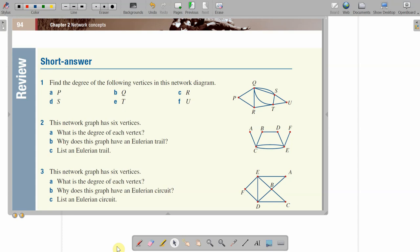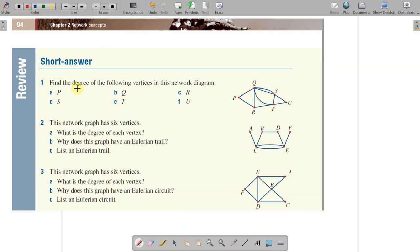Welcome to another revision video for chapter 2 on networks. This is the chapter revision starting on page 94. There are three short answer questions, so let's have a quick look. We've got finding the degree of the following vertices. The degree is where you count the edges coming off the vertices.